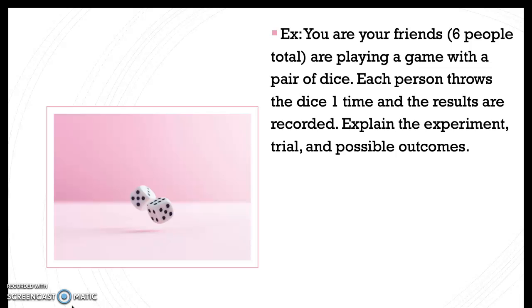So the experiment is rolling the dice. This is what we're doing. The controlled thing is we have two dice. Each person is rolling at one time. A trial is one roll of the dice. That's what's happening and we're repeating it over and over.